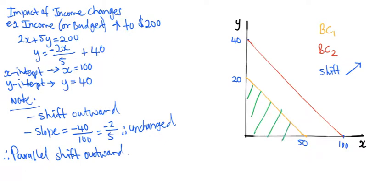In economic terms, there are now more combinations affordable. The green area has increased. Note if income had decreased, then there would be a parallel shift inwards and the affordable combinations would reduce.